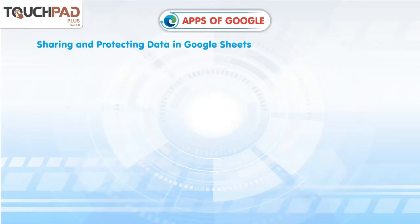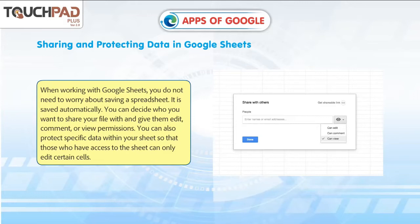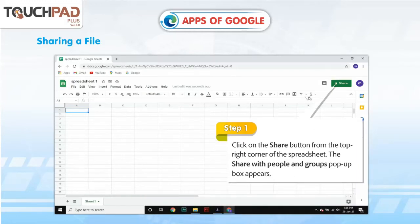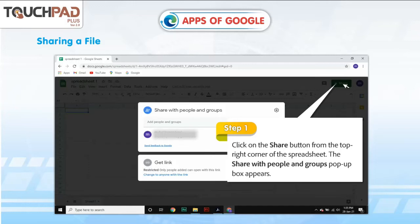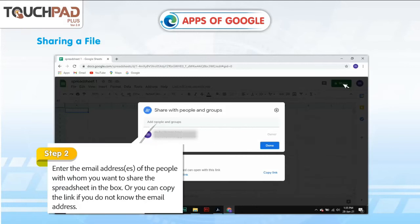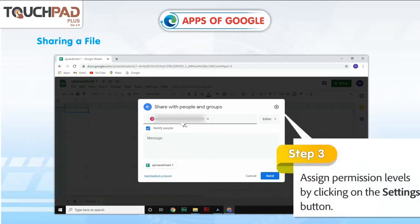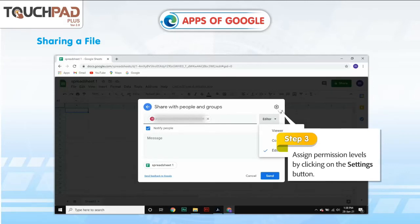Sharing and protecting data in Google Sheets. When working with Google Sheets, you do not need to worry about saving a spreadsheet — it is saved automatically. You can decide who you want to share your file with and give them edit, comment or view permissions. You can also protect specific data within your sheet so that those who have access can only edit certain cells. To share a file, Step 1: Click on the Share button from the top right corner of the spreadsheet. The Share with People and Groups pop-up box appears. Step 2: Enter the email address or addresses of the people with whom you want to share the spreadsheet, or copy the link if you do not know the email address. Step 3: Assign permission levels by clicking on the Settings button.